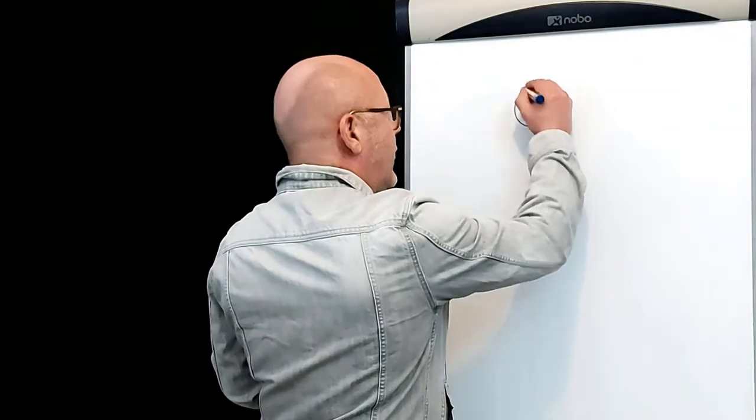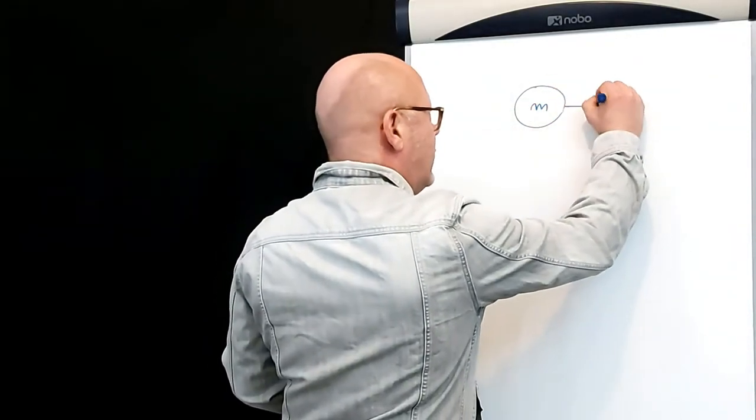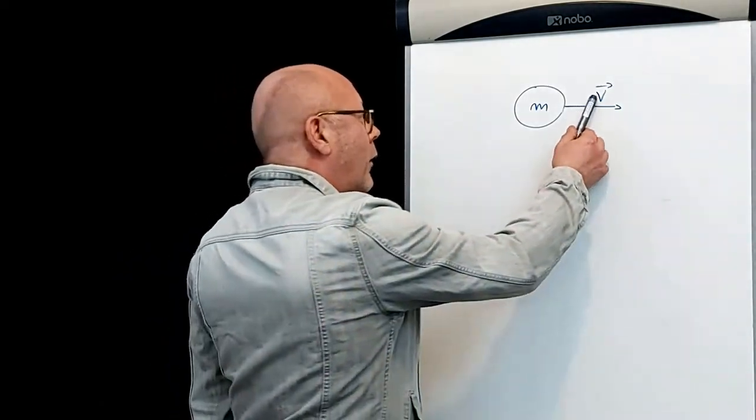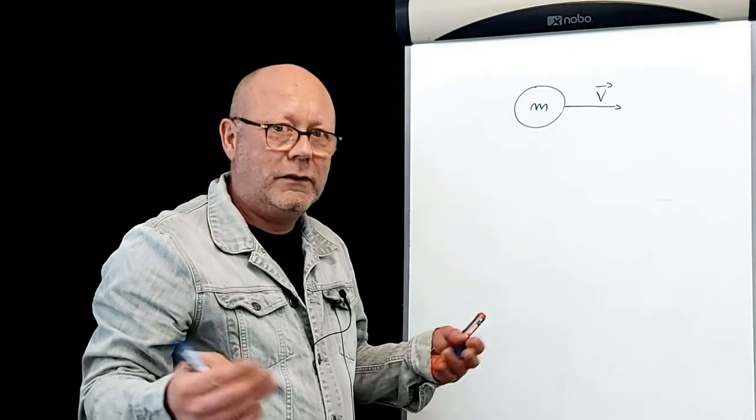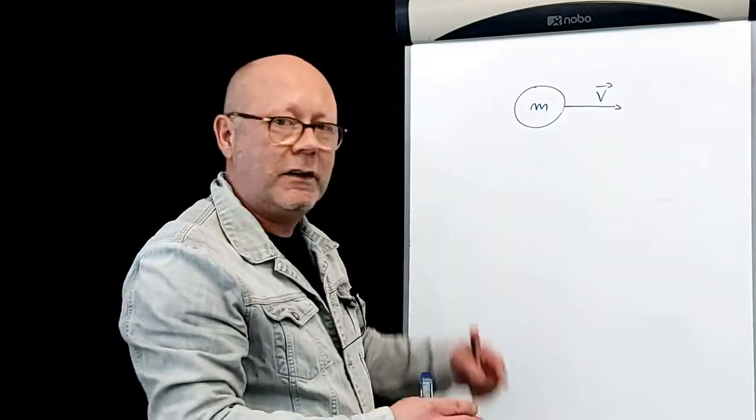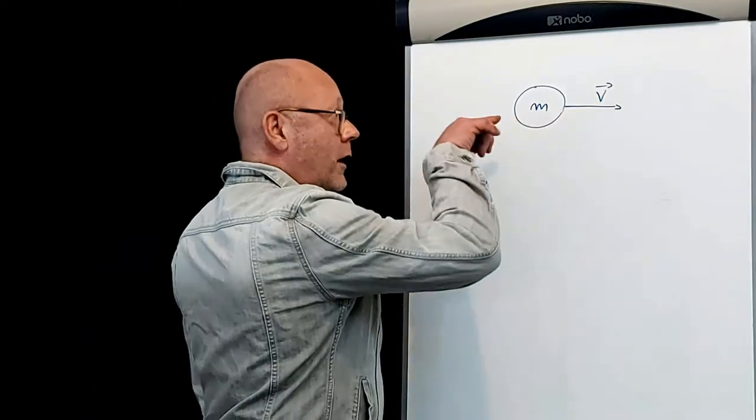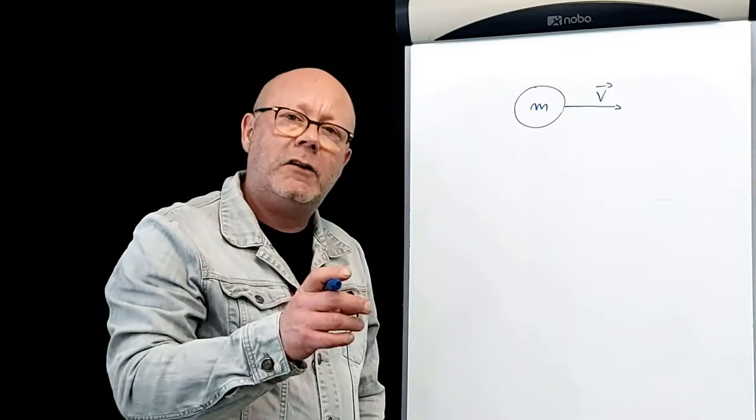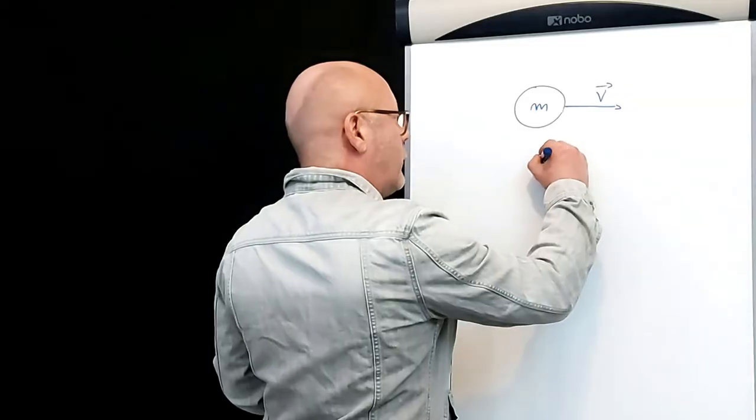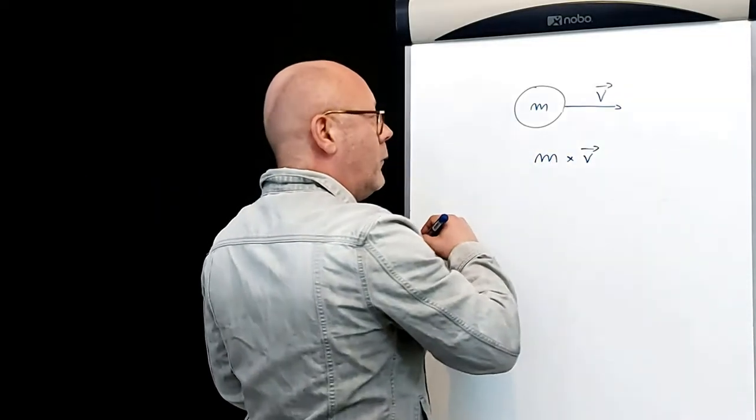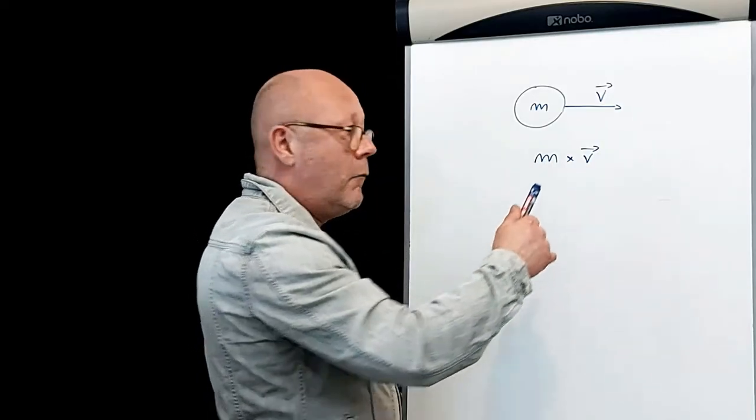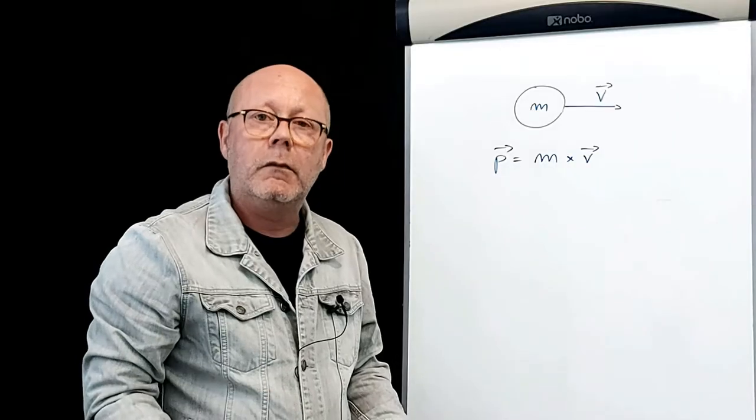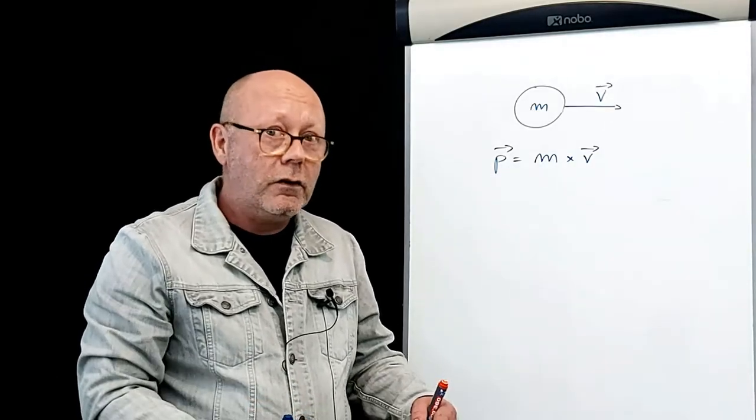Imagine an object of mass m, and it's moving, it's got a velocity v. M, the mass, is just a number. V has a magnitude, which is the speed, how fast the object is moving, but also a direction, it's going this way. Therefore, v is a vector. Now we know that momentum is mass multiplied by velocity. If I multiply a scalar by a vector, I get a vector. Momentum is a vector. It has a magnitude and a direction.